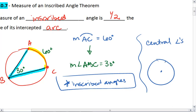So recall that if we had the central angle, and this was 60, then the angle itself would be 60.